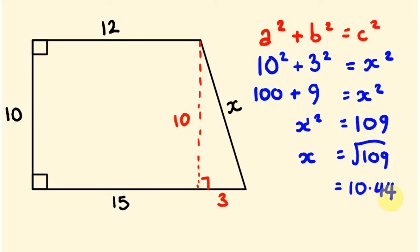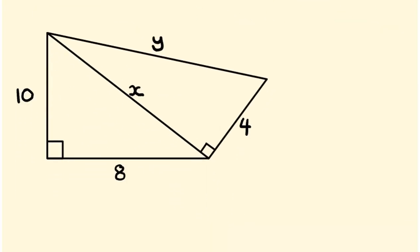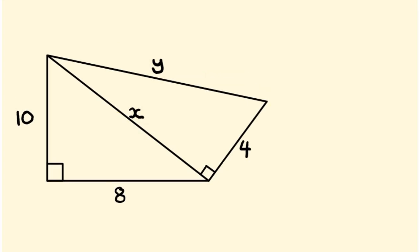The trick with this is to spot the right angle triangles you can possibly make to solve these types of questions — setting it up is the key. For the next example, we want to find not only one unknown length but two. We'll use Pythagoras' theorem to work out one triangle, then use that side length to find the hypotenuse of the next triangle. I'll call this triangle 1 and triangle 2, and we'll work out the hypotenuse of triangle 1 first.